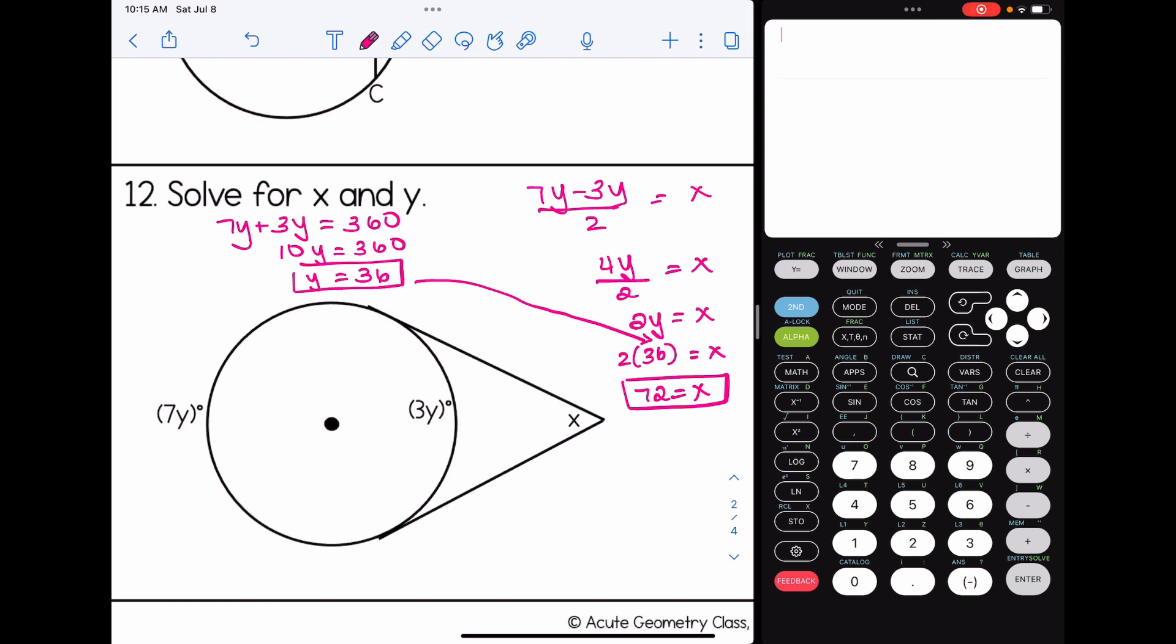Hopefully this video helped you understand a little bit more about the different angles and arc measures that are involved with chords, tangents, and secants. Again, the next video in this playlist uses chords, tangents, and secants as well, but it shows you how to find the missing segment lengths. Thanks for watching.